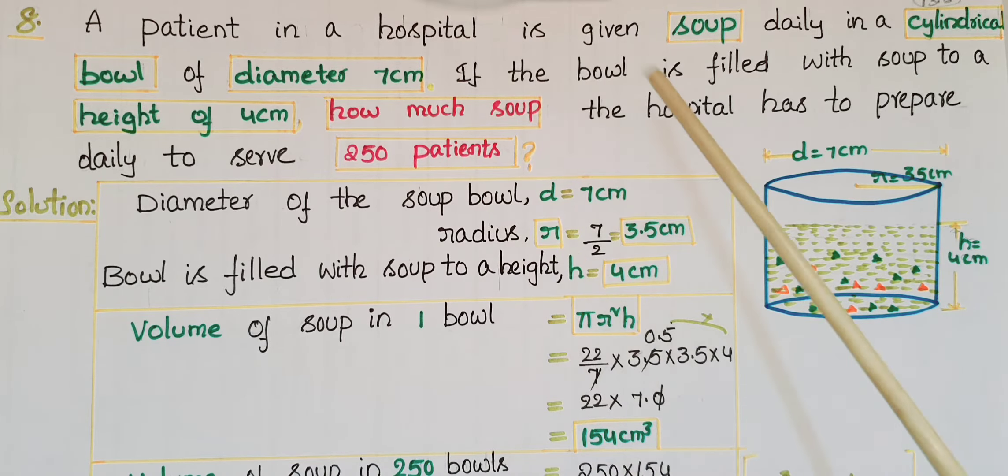And here the soup is filled to a height of 4 centimeters, so bowl is filled with the soup to a height of h is equal to 4 centimeters. And here we have to find how much soup the hospital has to prepare daily to serve 250 patients.